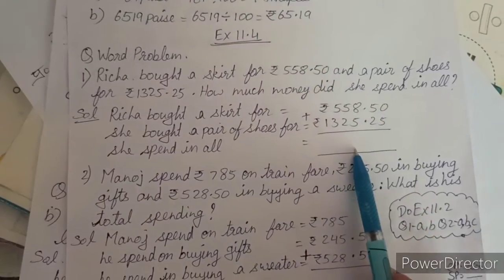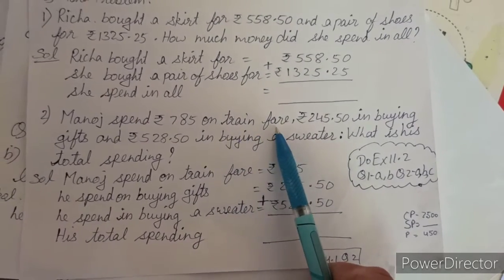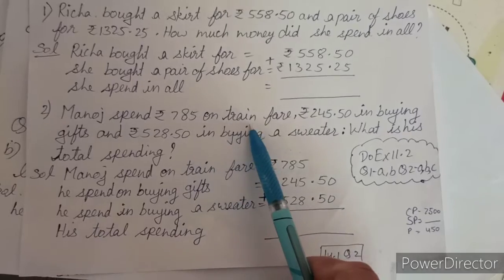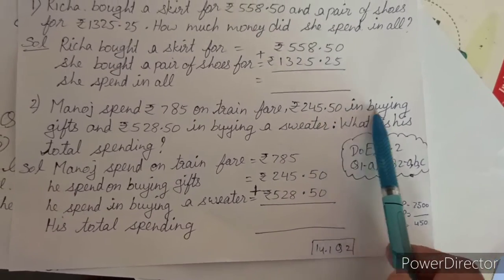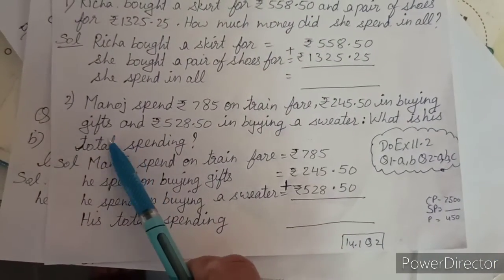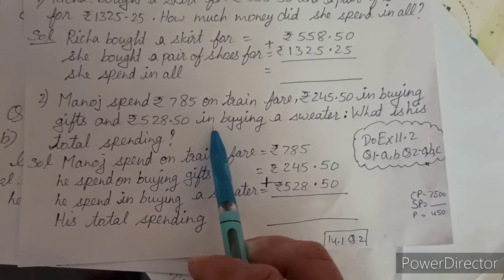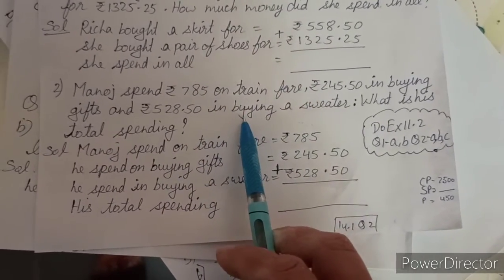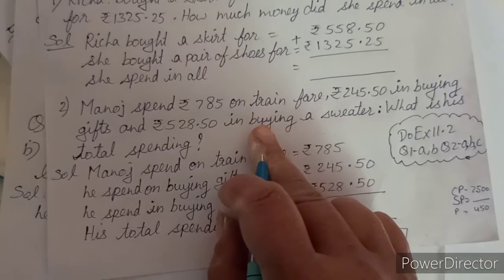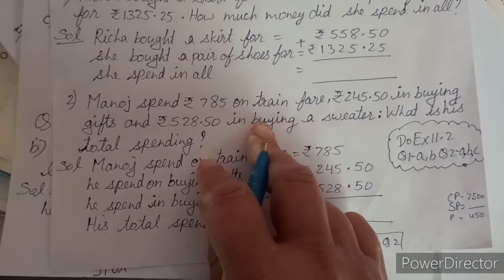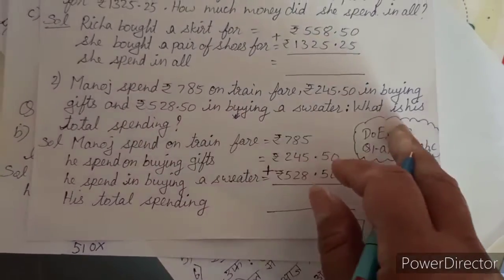Next: Manoj spent rupees 785 on train fare, rupees 245.50 on buying gifts, and rupees 528.50 on buying a sweater. What is his total spending? We will add all three amounts.